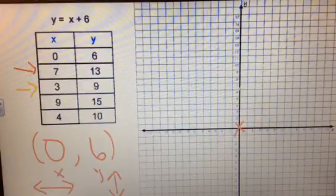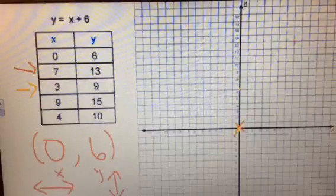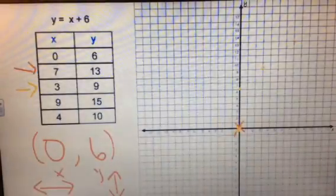Our next point is going to be 3, 9. So again, starting at our origin, we move to the right 3 and up 9. So our point is right there.